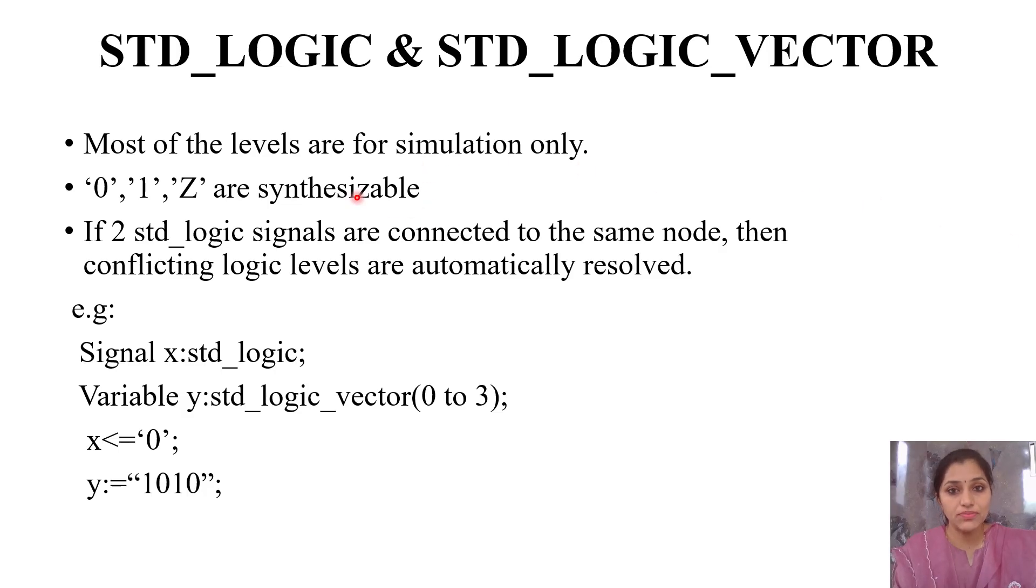Standard logic means 1 bit. Standard logic vector means array. Signal x is of type standard logic, so instead of bit, we write standard logic. Standard logic can have any value: 0, 1, high impedance, W, or any of the 8 values. Here, x is assigned as 0.